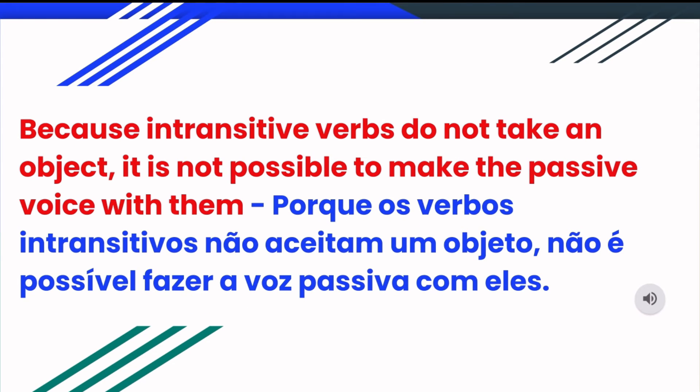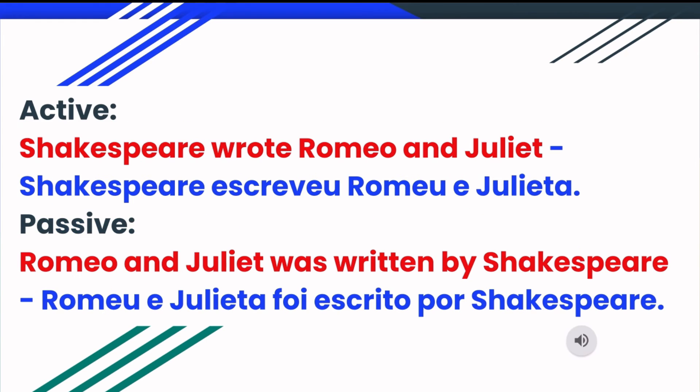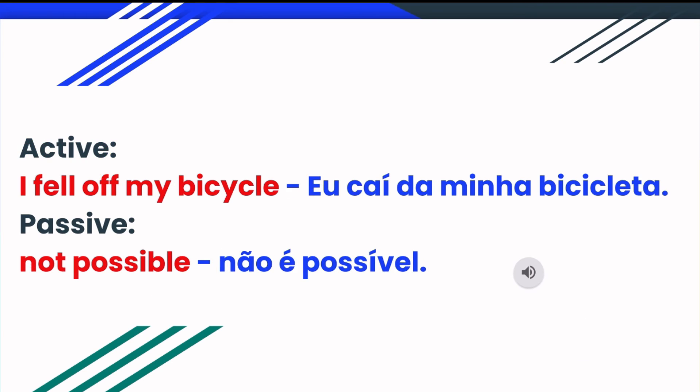Because intransitive verbs do not take an object, it is not possible to make the passive voice with them. Active: Shakespeare wrote Romeo and Juliet. Passive: Romeo and Juliet was written by Shakespeare. Active: I fell off my bicycle. Passive: not possible.